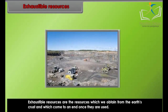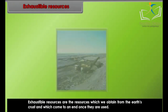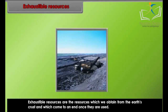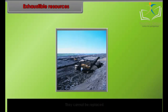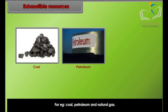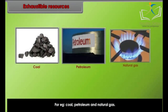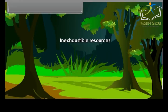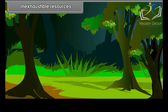Exhaustible resources are the resources which we obtain from the earth's crust and which come to an end once they are used. They cannot be replaced. For example, coal, petroleum, and natural gas.